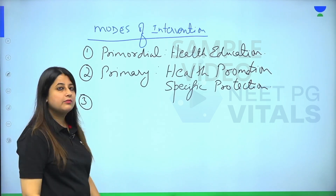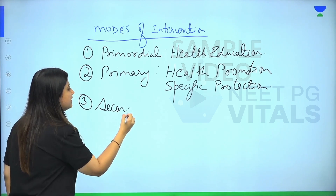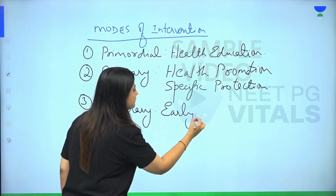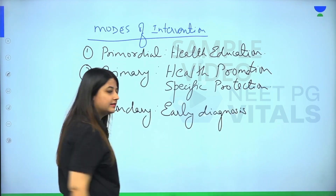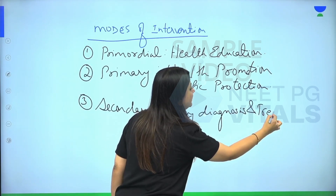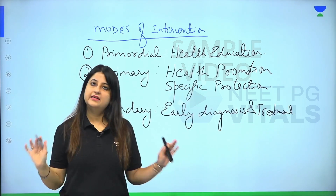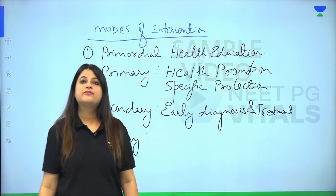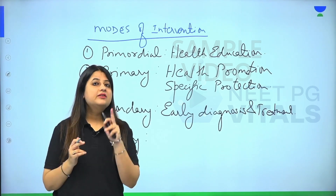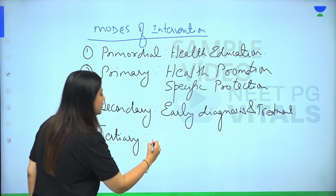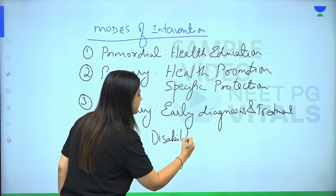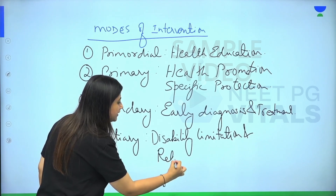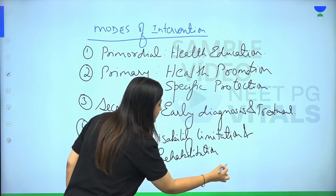For secondary level of prevention — disease has started but not gone to a stage of irreversibility — it is achieved through two modes of intervention: early diagnosis and treatment. And tertiary level of prevention — complications have occurred — is achieved through disability limitation and rehabilitation.